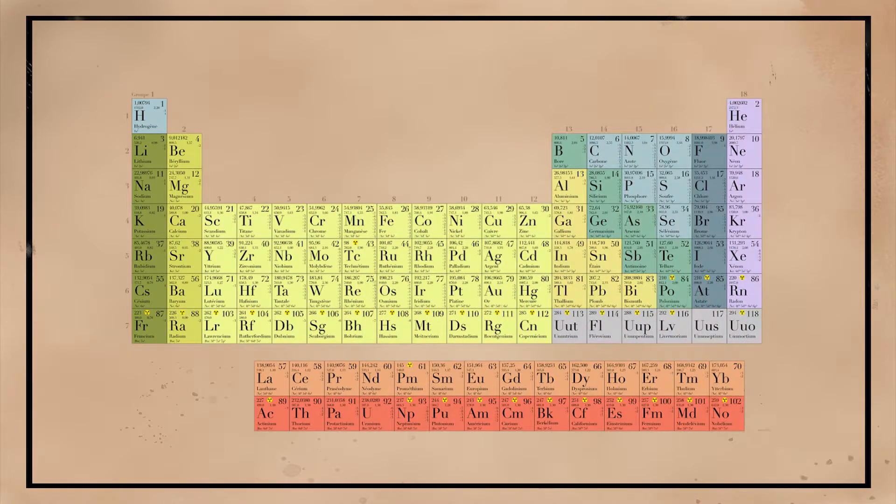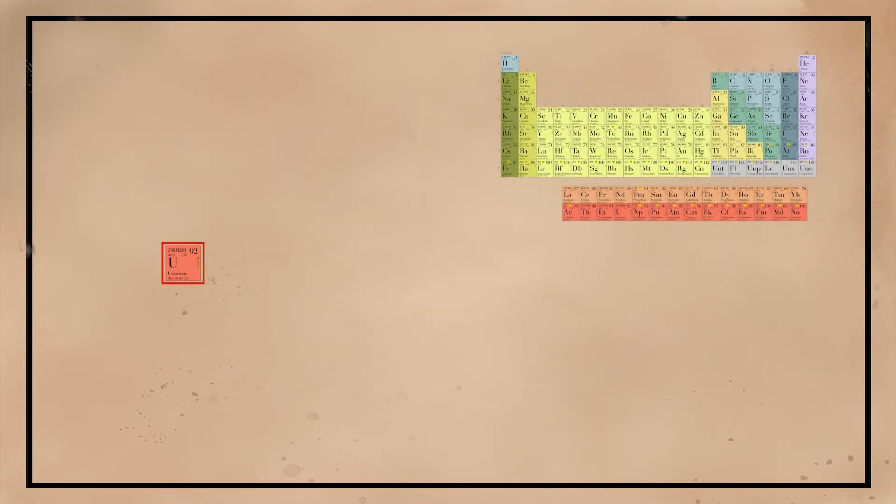Fission is a nuclear reaction going in the opposite direction of fusion. Fission is the splitting of nuclei of heavy elements such as uranium-235, producing lighter elements and large amounts of energy. Fission is relatively easy to initiate compared to fusion.